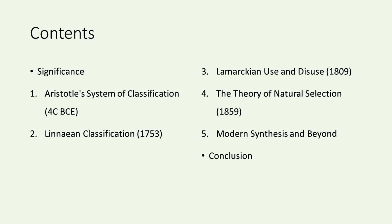Our journey then takes us to Charles Darwin's theory of natural selection, published in 1859. Darwin's work presented a mechanism for evolutionary change, highlighting the roles of variation, adaptation, and survival of the fittest in shaping the diversity of life on Earth. We'll then examine the modern synthesis, which integrated genetics and evolution, and touch upon subsequent advancements. Finally, we'll conclude with reflections on the overarching themes and the continued relevance of this field. This structured approach will help us appreciate the progression of ideas and the enduring impact they've had on our understanding of life. Let's begin.